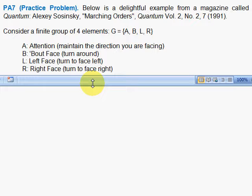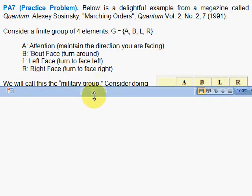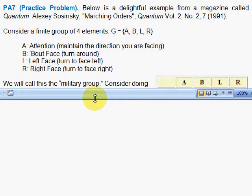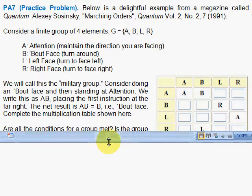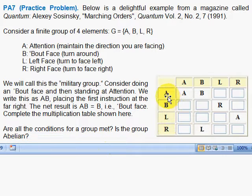And the binary operation, simply one applied after the other. So we find what's called the multiplication table. And the multiplication table here, if we say attention times attention, or multiplied by attention. We use the word multiplication, but it's really the binary operation A with the binary operation A. And if we do that, it's still A, it's attention. If you do attention and attention again, it's attention. Suppose you do attention and then bout face. Well, you turned around, you're about face.